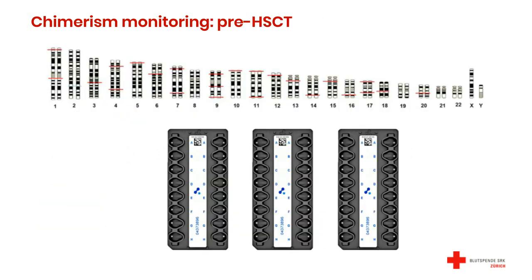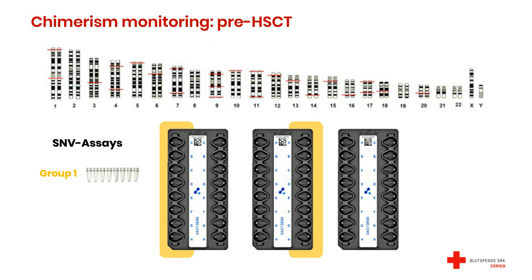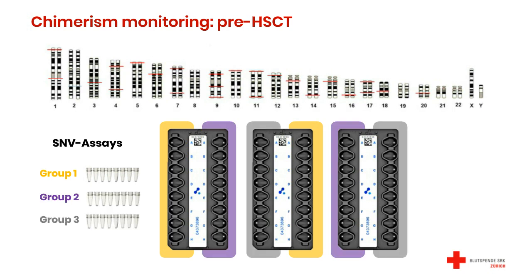The first step of chimerism monitoring is to genotype patient and donor for our 24 single nucleotide variants using samples from before the transplantation. We use a full crystal digital PCR run with Opal chips — three Opal chips, one full run per patient. We divided our 24 SNVs into three groups, which we pipette from three PCR strips onto our Opal chips using a multichannel pipette. On the left side of our run, we pipette the DNA of the recipient, and on the right side, we pipette the DNA of the donor. This is our pre-transplantation setup.